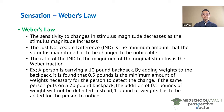Now let's say the same person puts on a 20 pound backpack. If you were to add a half pound weight, the person would not be able to detect that change. Instead, you would need to add a one pound weight in order for the person to notice the change. That's because the Weber fraction for this individual is 5%, so they're not going to be able to detect a change in the stimulus magnitude unless it changes by at least 5%.